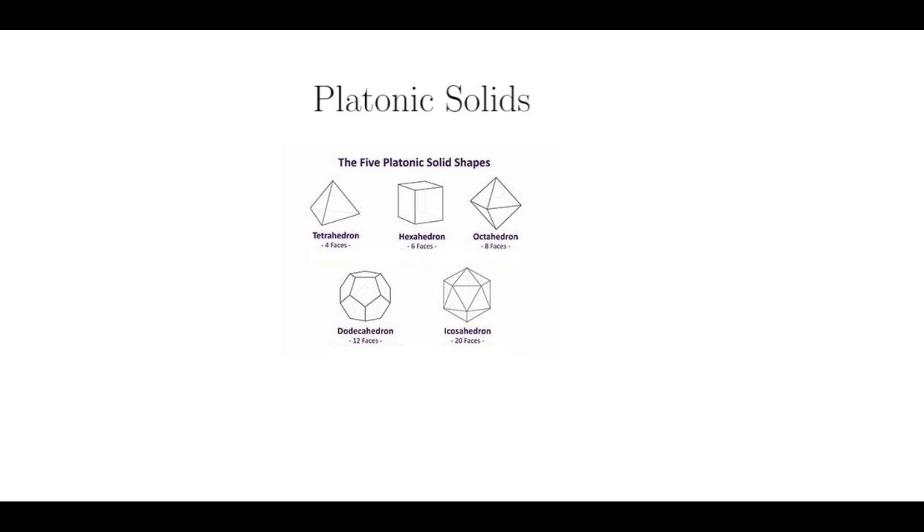The next simplest platonic solid is the cube, which has six sides that are all squares. There is, of course, the dodecahedron that is based off the pentagon, and the last two solids, which are the octahedron and the icosahedron, are both based on the triangle. But I will focus on the numbers associated with the tetrahedron and the cube.